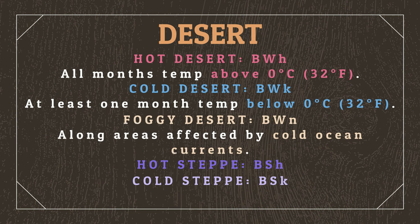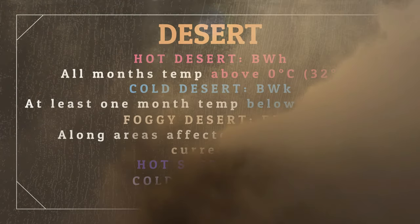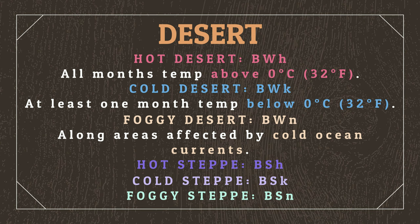In addition, a third desert classification exists for deserts along areas affected by cold ocean currents, which are called foggy deserts. Despite being some of the driest areas on the planet in terms of precipitation, they experience frequent fog that rolls in from the coast. These foggy conditions can also exist similarly in steppe climates.